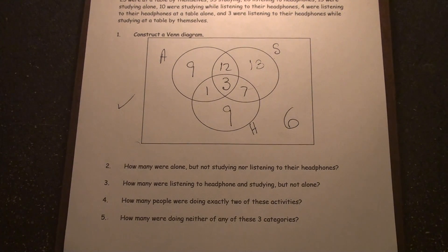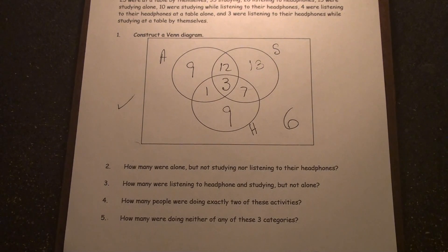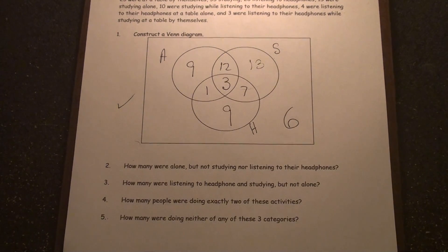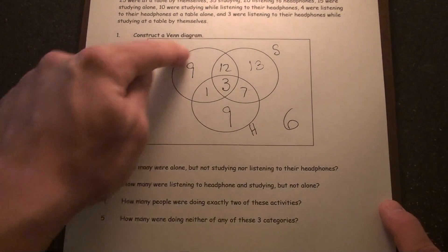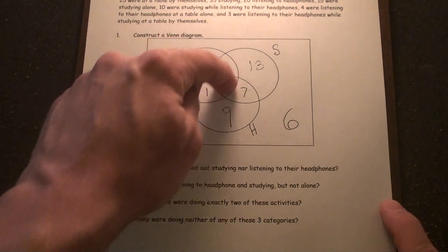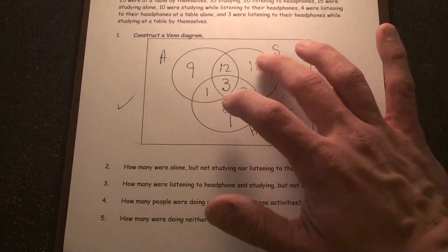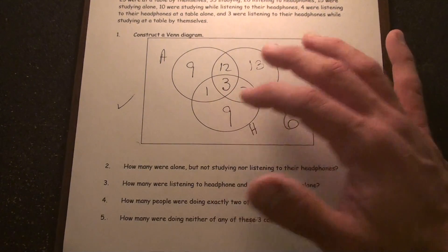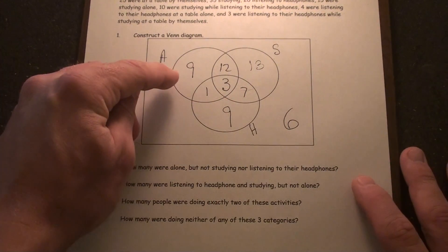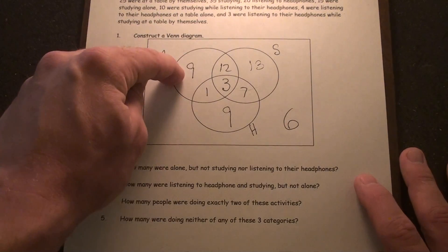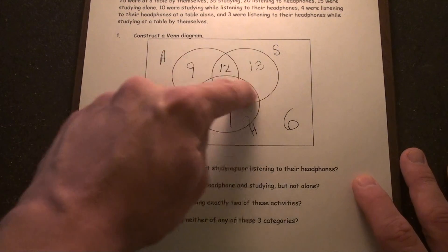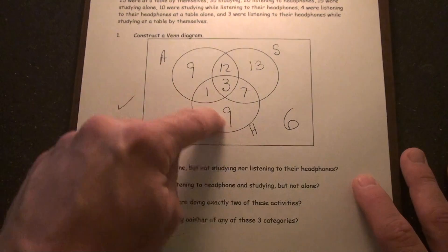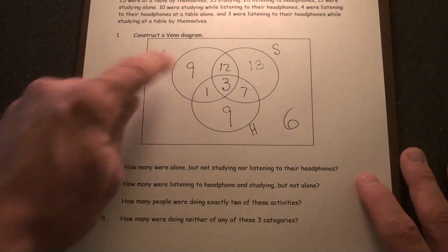Number two: how many were alone but not studying nor listening to their headphones? What we're looking for is people that were in the alone set, but they're not in the studying or headphone set. That would actually only be this number here, nine. So there's only nine people that were alone and not in the studying set or the headphone set. Therefore, nine.